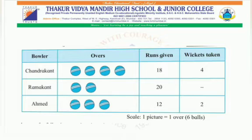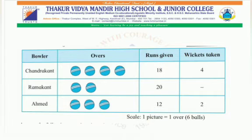Here, the picture of balls has been made. One picture indicates one over, that is equals to six balls. So, in Chandrakant's over column there are four balls, which indicates four into six, which equals twenty-four. Similarly, Ramakant has twelve balls, Ahmed has eighteen balls, and the runs scored are eighteen, twenty, and twelve respectively. The wickets taken are four, zero, and two.